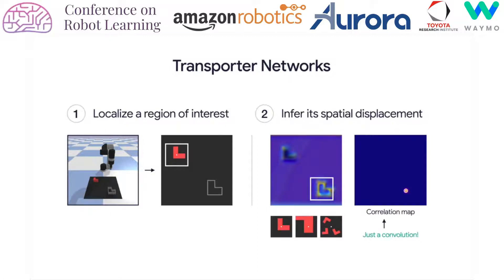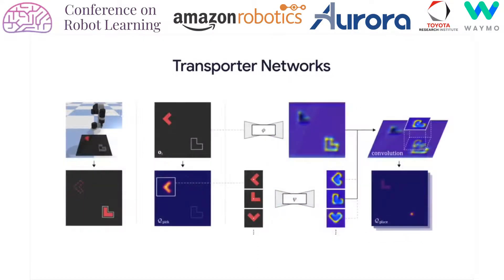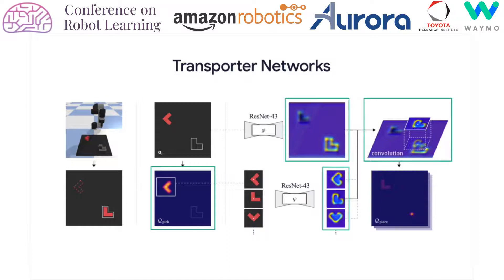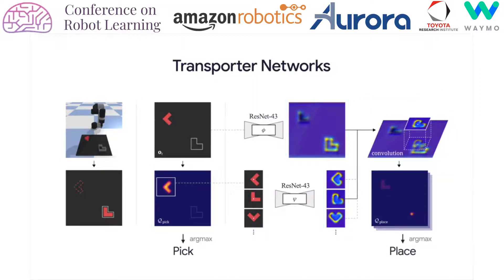Conceptually, this can be thought of as an exhaustive search over the entire space of possible displacements, which can be efficiently implemented as a convolution, making it fast to run on a GPU. In practice, these dense features can be computed from fully convolutional networks, which are 43-layered ResNets in our case. Preserving spatial structure throughout the entire model enables it to better exploit equivariances as inductive biases present within the symmetries of the data for more efficient learning. The model can then parameterize robot actions such as pick and place for rearrangement tasks, which can be directly trained end-to-end from demonstrations.